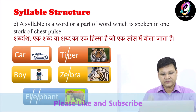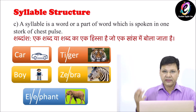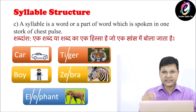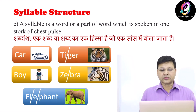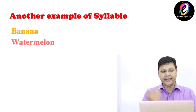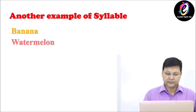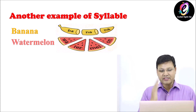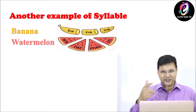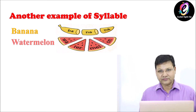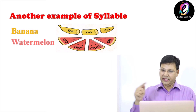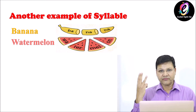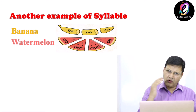Another example: 'elephant.' How many strokes? Three strokes — so this word is a three-syllable word. Look at another example: 'banana' and 'watermelon.' I have cut the fruit to make you understand how you can break this syllable. 'Ba-na-na' — three syllables. 'Watermelon' — four syllables.